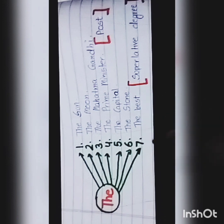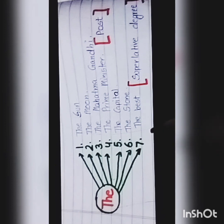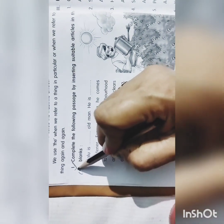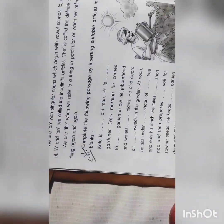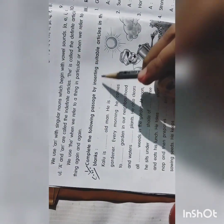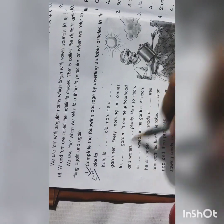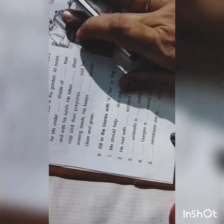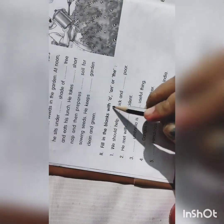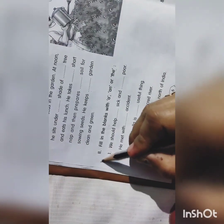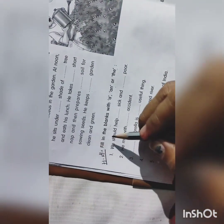The use of articles a, an and the is now complete. This is your classwork and homework. Question number one: complete the following passage by inserting suitable articles in the blanks — this is your classwork. Question number two: fill in the blanks with a, an or the — this is your homework. You have to do it in your English 1 notebook. Thank you.